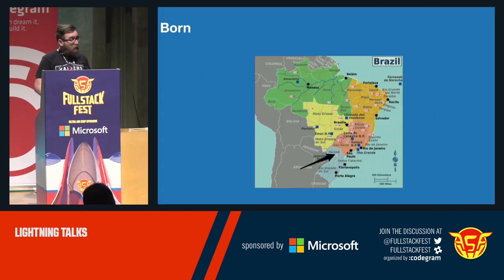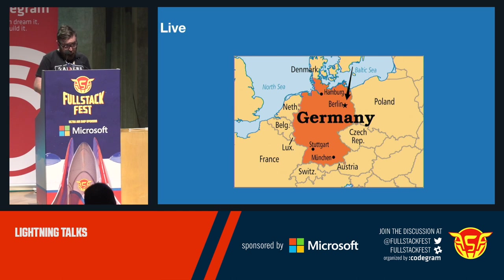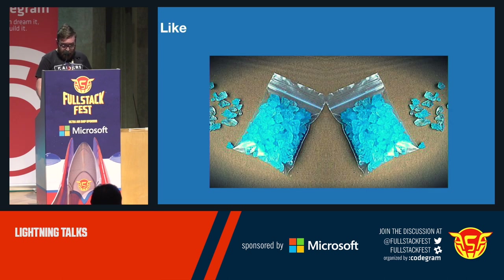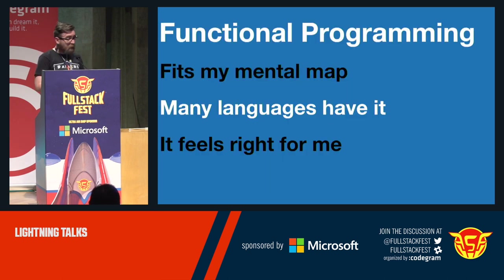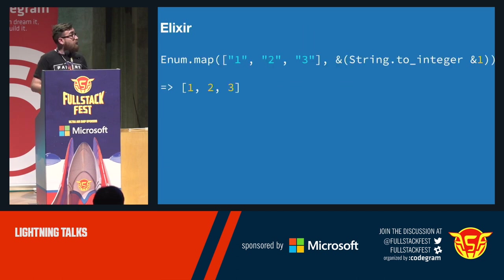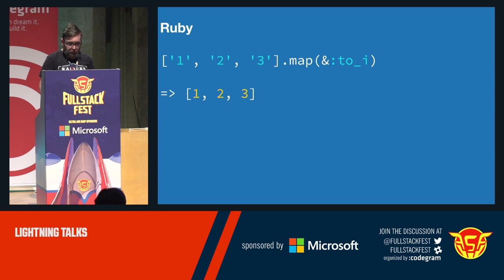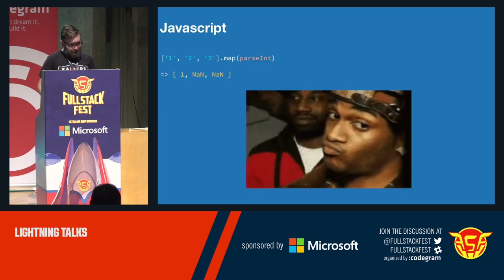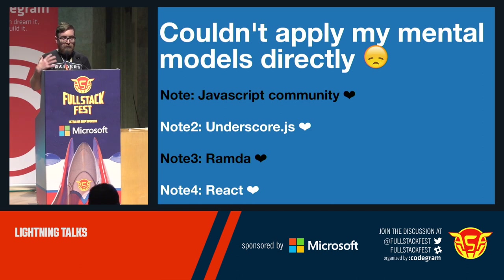Hi. I'm Paulo. I was born here, I live here, I work at Bitcrown. I like Doge, my cat, and functional programming — it fits my mental model. Many languages have it and it just feels right. This is code I write daily: mapping an array of strings and calling them to integer. This outputs 123. Same thing in Ruby — 123 is basically 123. But that doesn't happen in JavaScript, so I couldn't apply my mental models directly.